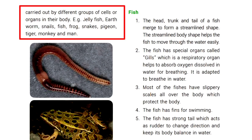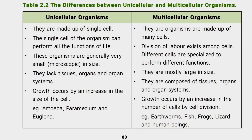The major differences between unicellular and multicellular organisms: Unicellular organisms are made up of a single cell, while multicellular organisms are made up of many cells. In a unicellular organism, the single cell performs all the functions of life. In multicellular organisms, division of labor exists — different cells are specialized to perform different functions.